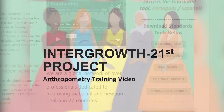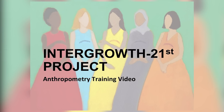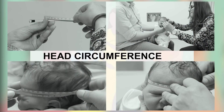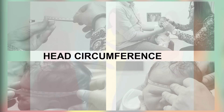Anthropometry involves a systematic measurement of the physical properties, size and shape of the human body. In this short film, you will be shown how to measure the head circumference, length and weight of newborns and how to interpret those measurements using the Intergrowth 21st newborn size application tool. The same methodology presented here can be applied to older children up to two years of age.